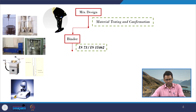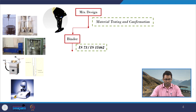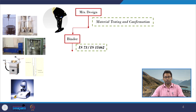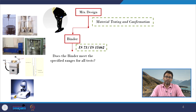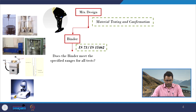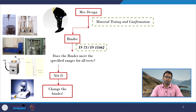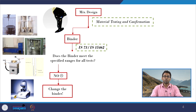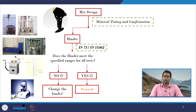Once we get the binder, we subject it to a series of tests as given by different highway agencies to confirm the use of the binder for construction of the pavement. Once we complete the tests, we check if the binder meets the specified ranges — the minimum or maximum values specified by the codal provision of the respective highway agency. If the binder does not satisfy all criteria, we change the binder. If it satisfies all criteria, we proceed, meaning we have completed the first task of selecting the bitumen.